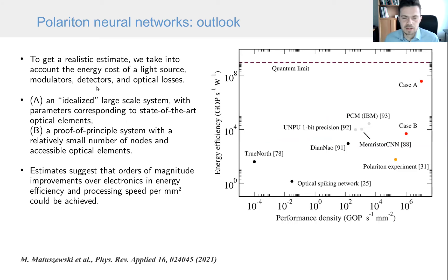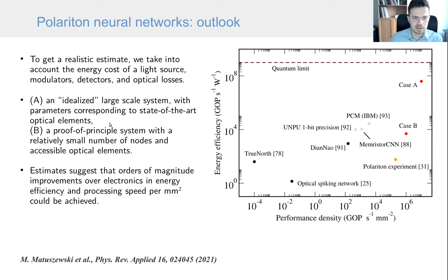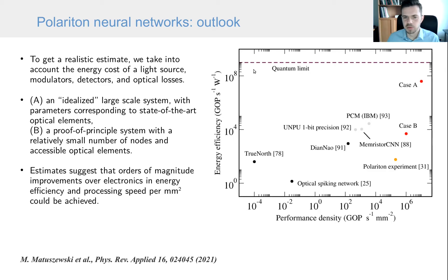To get a realistic energy estimate, we took into account all costs: the light source, laser modulators, detectors, and optical losses. We considered two cases: an idealized large-scale system with state-of-the-art parameters, and a proof-of-principle system with a small number of nodes and easily accessible optical elements. In both cases, we can achieve improvements in both energy efficiency and performance density — typical measures of efficiency for information processing systems — which is quite promising, thanks to the high nonlinearity of exciton polaritons.